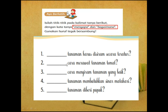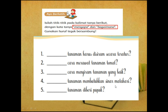Kemudian nomor dua: cara merawat tanaman tomat. Menggunakan kata bagaimana. Bagaimana cara merawat tanaman tomat. Nomor tiga: cara menyiram tanaman yang baik. Juga menggunakan kata tanya bagaimana. Bagaimana cara menyiram tanaman yang baik. Nomor empat: tanaman membutuhkan sinar matahari. Karena ini menanyakan sebab, maka menggunakan mengapa. Mengapa tanaman membutuhkan sinar matahari.